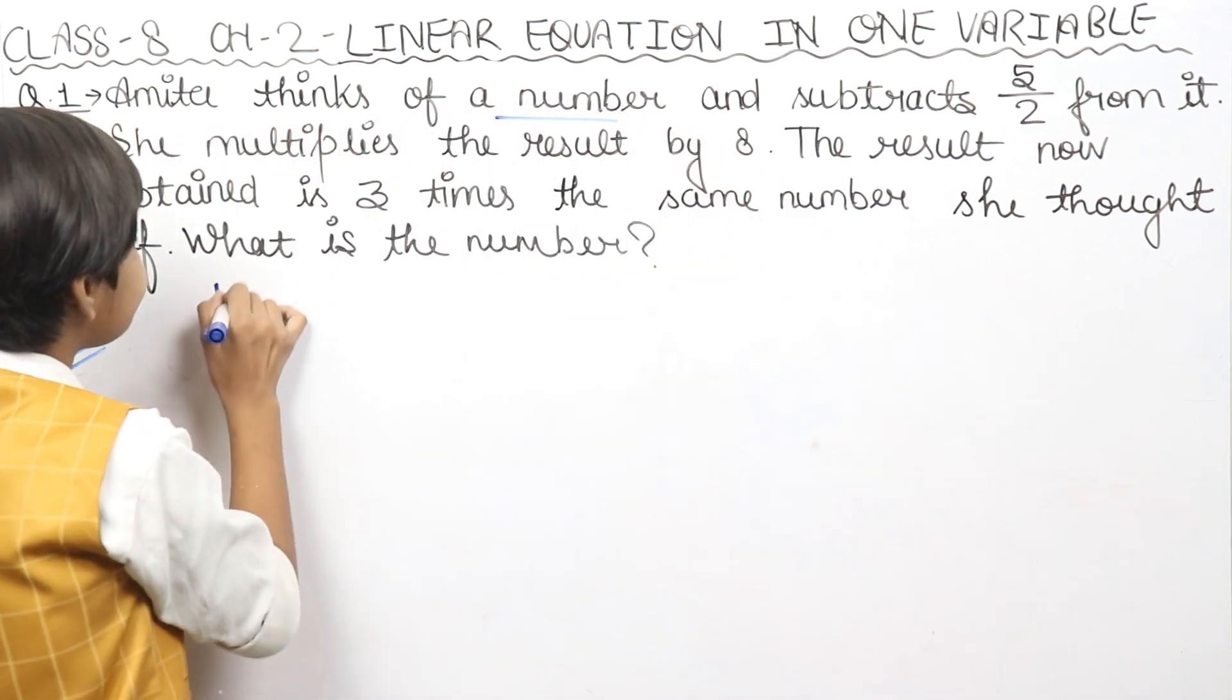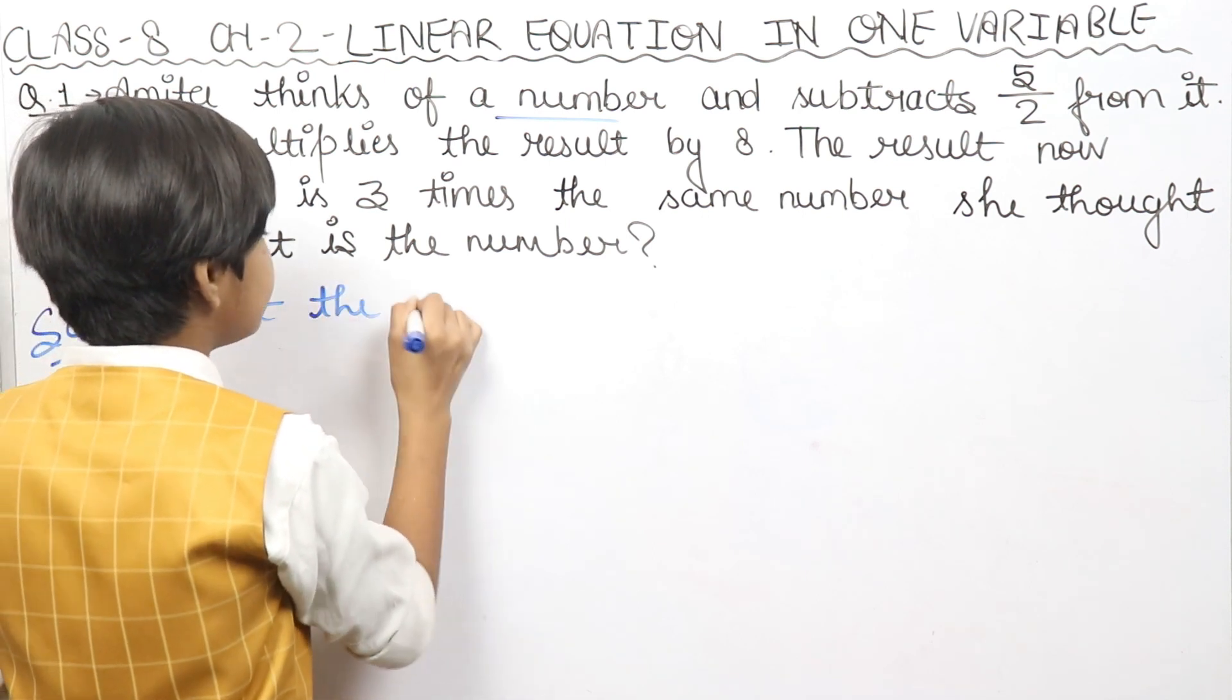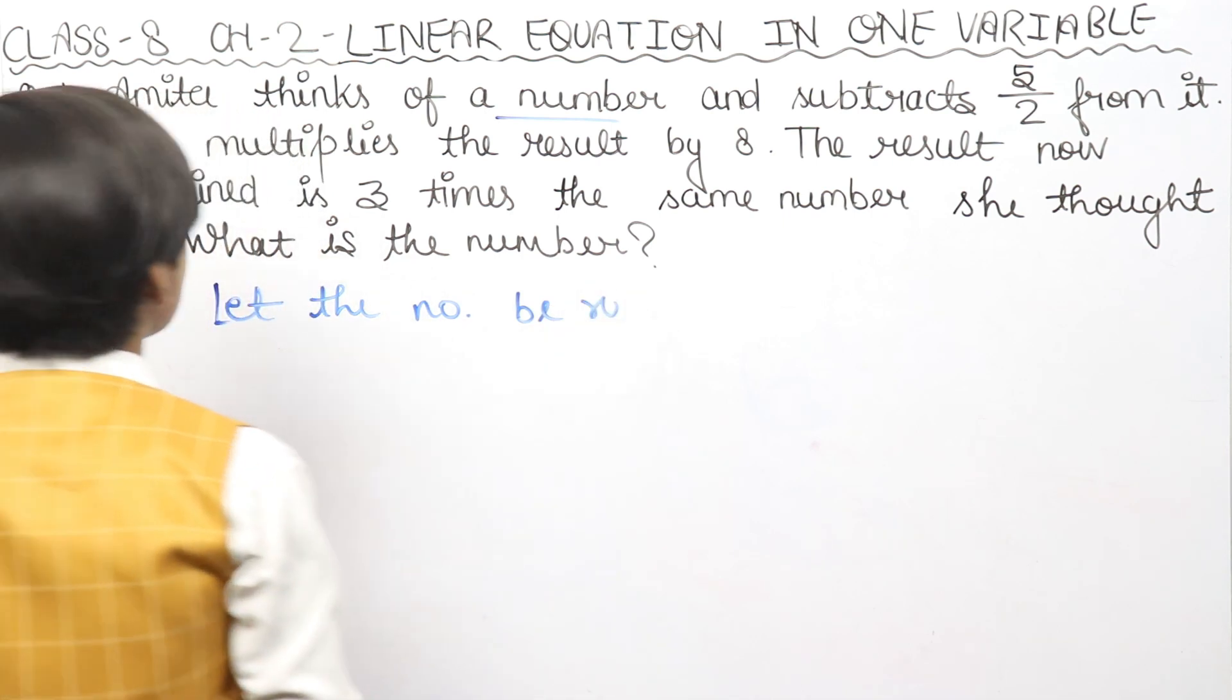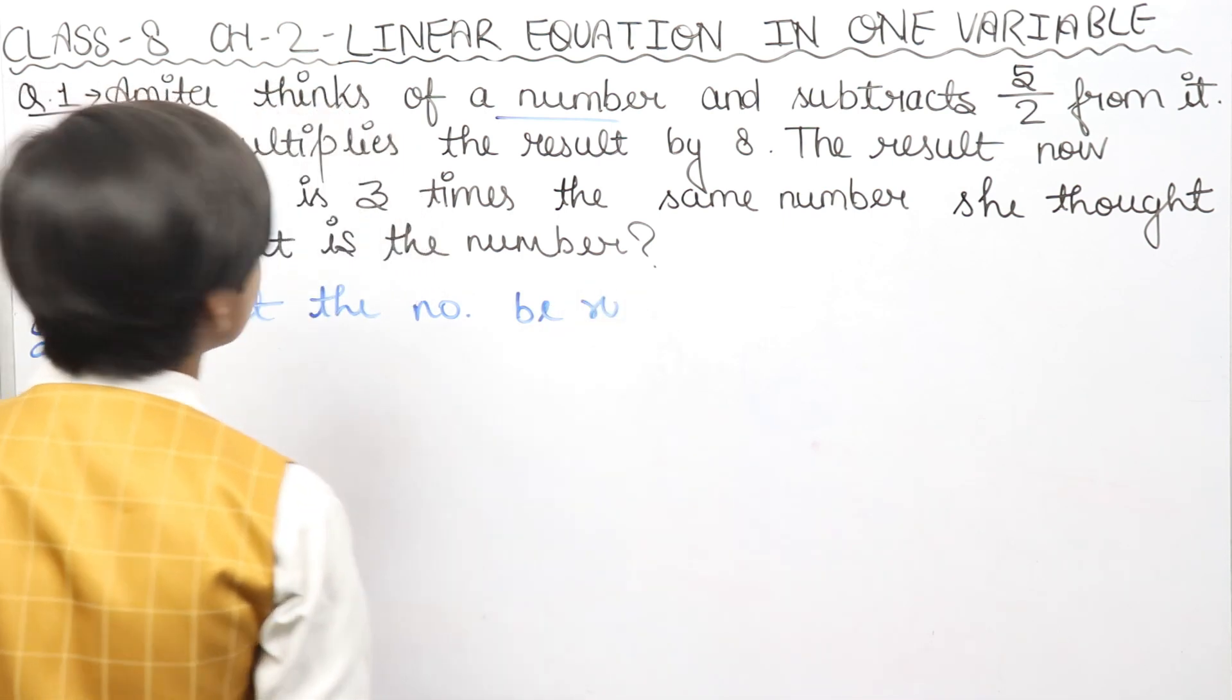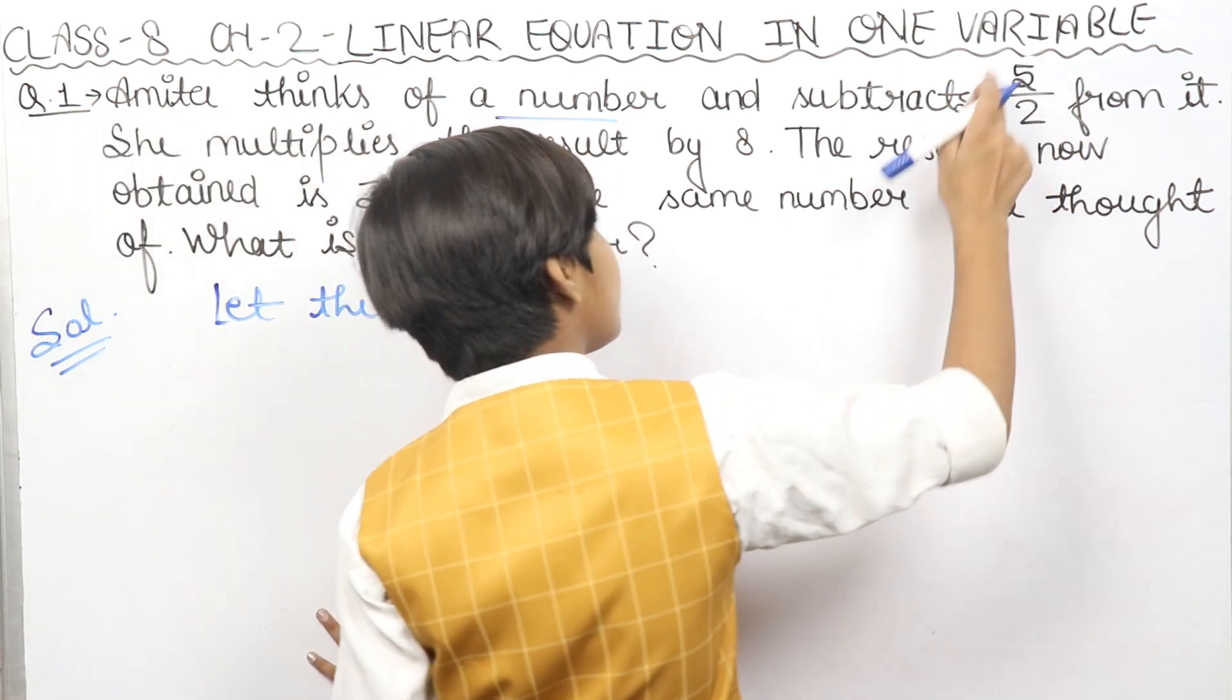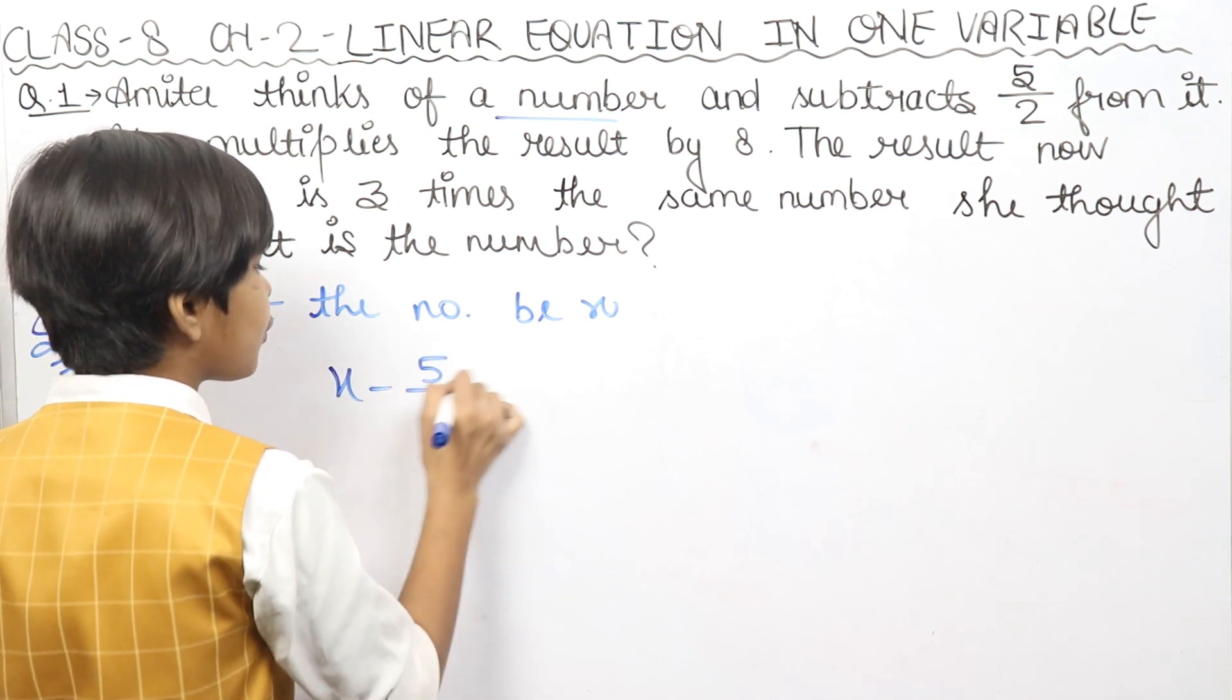Let the number be x. Okay, the number is x. Now what is subtracted from x? 5 upon 2. Because from the number x, we subtract 5 upon 2.